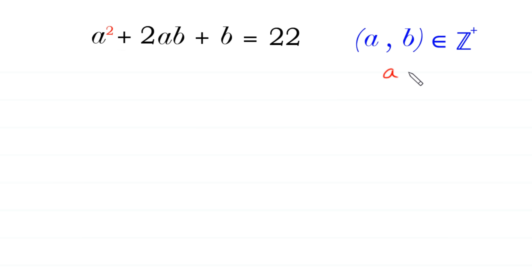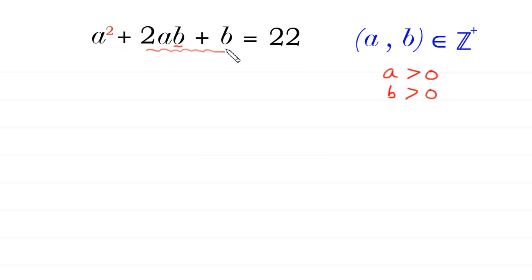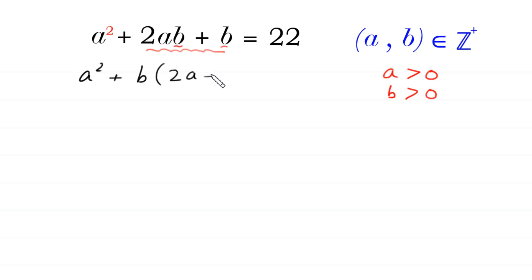It means a is greater than 0 and b is greater than 0. First of all, from these two terms 2ab plus b, we can factor out b. We write a squared first: a squared plus b times, in bracket, 2a plus 1 is equal to 22.